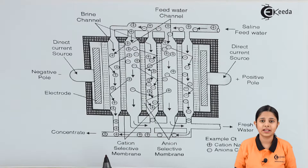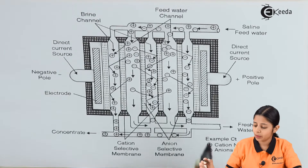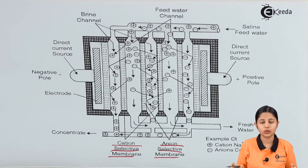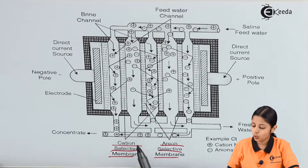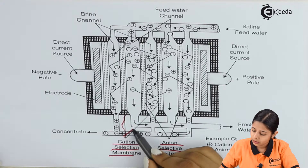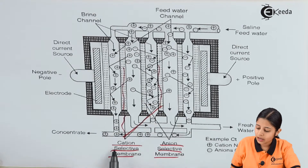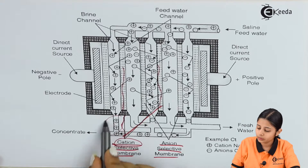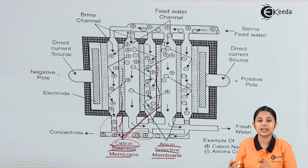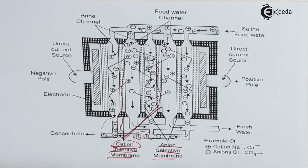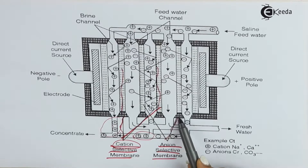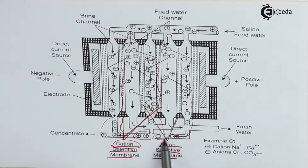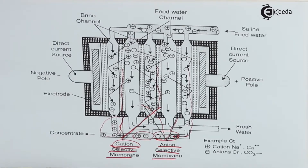Looking at the diagram that explains the entire process of electrodialysis, there are two types of semi-permeable membranes: cation selective membranes and anion selective membranes. The cation selective membranes allow cations to flow through them — you can see positive ions flowing down through these membranes, getting concentrated and eventually removed from the water. The anion selective membranes allow negative ions to flow through them. These anions flow and get collected in the concentrate and are removed. Examples of cations shown are Na+ and Ca2+; examples of anions are Cl- and CO3 2-.